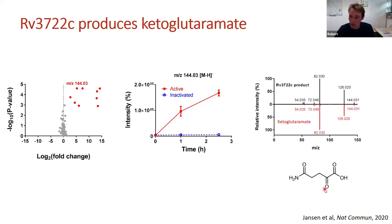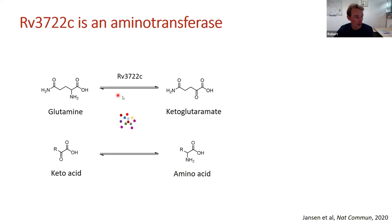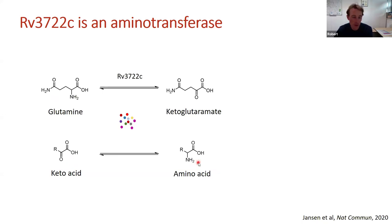To confirm the identity, we synthesized ketoglutaramate — it wasn't commercially available — collected an MS2 spectrum, and it matched. This confirmed rv3722c makes ketoglutaramate, the keto acid of glutamine. This makes sense because aminotransferases work on amino acids and keto acids. However, in our ABMP screen we didn't observe consumption of glutamine or a keto acid, nor formation of an amino acid.